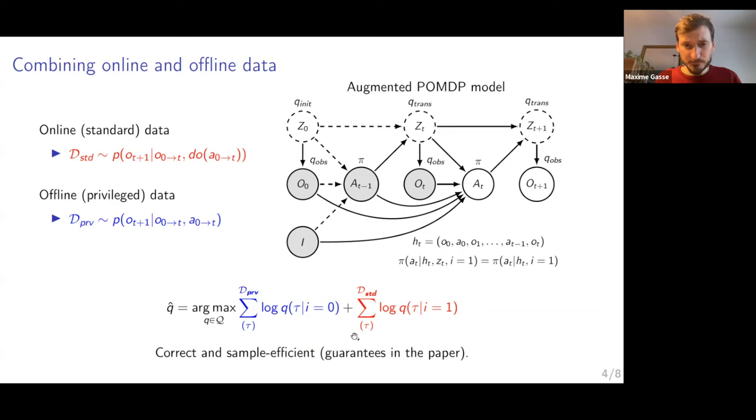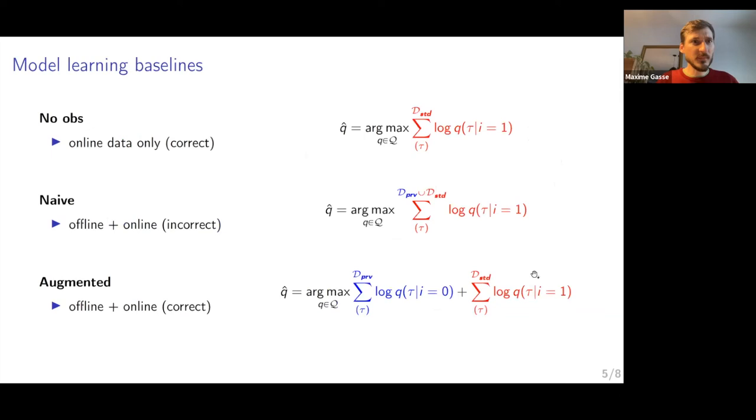So when you use privileged data in addition, this will constrain your model to be compatible with both regimes. Your model has to explain at the same time the privileged regime and the standard regime. What this will do is that it will constrain your model in the standard regime. So it will regularize your model in the standard regime. Your privileged confounded data will act as a regularizer for your regular causal transition model that you want to learn. If you want proofs that this is correct and that this is sample efficient, meaning that this regularizer will give you better generalization guarantees, then you can check the paper.